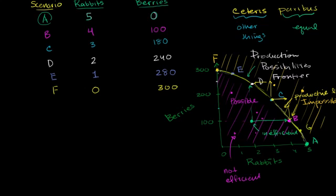Now, all of these five or six scenarios on the frontier achieve productive efficiency. But which of these do we pick? How do we decide to allocate our time? What I want to talk about in this video is allocative efficiency. It's somewhat subjective, based on the preferences of the hunter-gatherer, but it gives us a framework for thinking about which scenario meets our preferences the best.